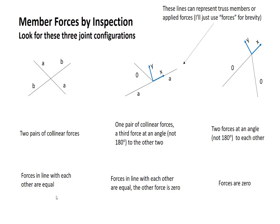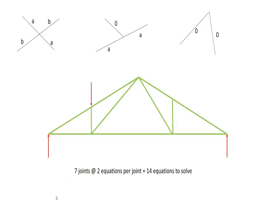Now let's see how we apply this in an example. Here I'm showing the example truss. I'm showing the three joint configurations from the previous slide. I'm showing an assumed loading on the truss and the reactions that must be there to maintain equilibrium.